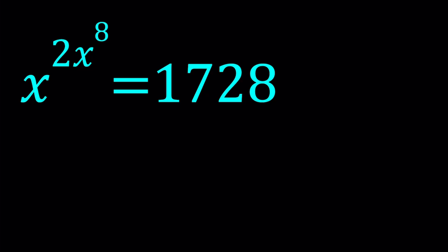So we have X to the power 2X to the 8th equals 1728. That's such a large number — I made this number large on purpose so that it wouldn't be easy to guess. I know some of you know the strategy here, the trick, but if you don't, let's see. Hopefully you're going to learn something new.